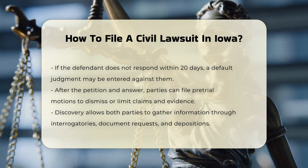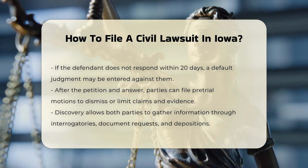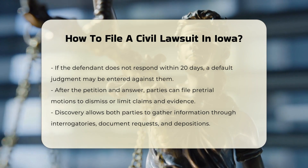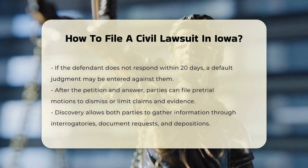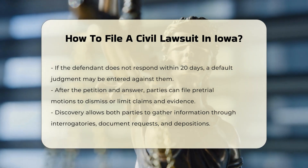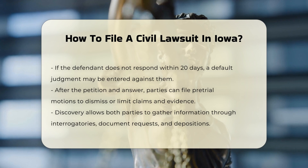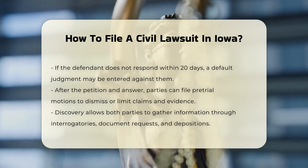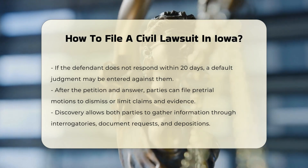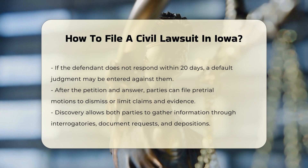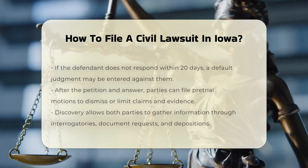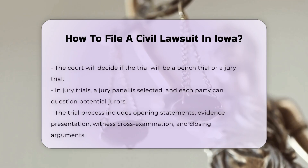Jury Selection and Trial. If the case proceeds to trial, the court will determine whether it will be a bench trial or a jury trial. For jury trials, a jury panel is selected, and each party has the opportunity to question prospective jurors. The trial involves opening statements, presentation of evidence, cross-examination of witnesses, and closing arguments. The standard of proof in a civil trial is a preponderance of the evidence, meaning more likely than not.